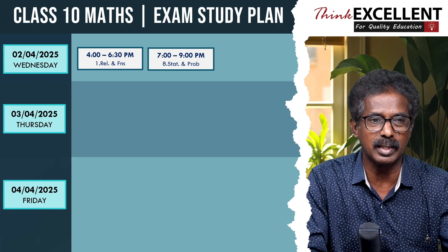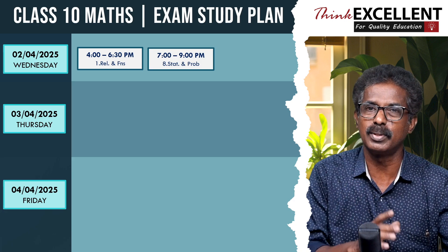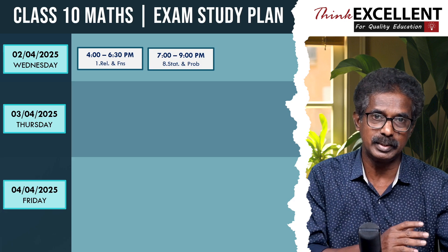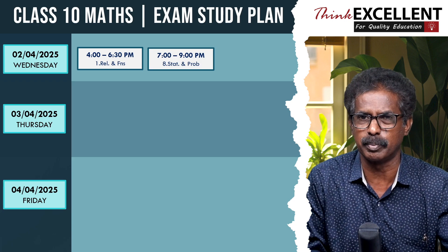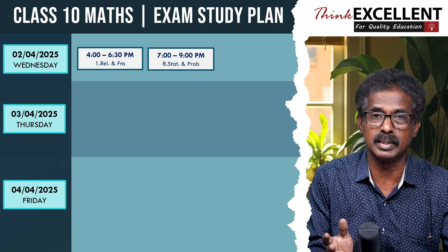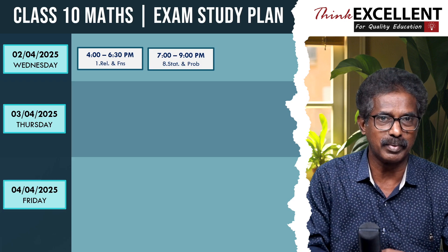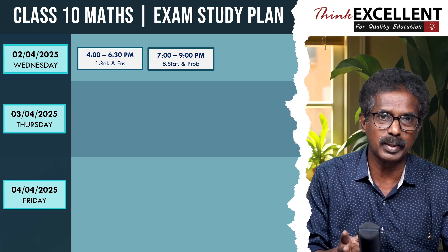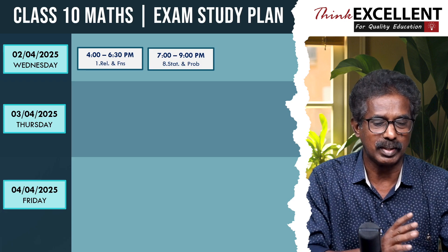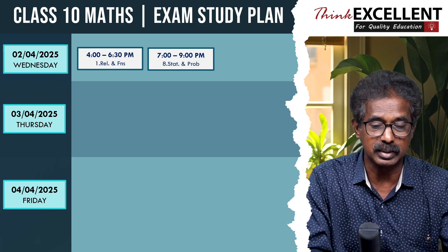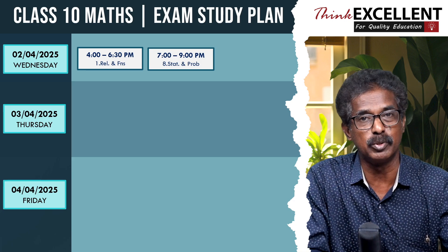Then take half an hour break, then from 7 o'clock to 9 o'clock — in 2 hours — it's easy to learn Chapter 8: Statistics and Probability. It's a comparatively easy topic. In the first two exercises: range, standard deviation, coefficient of variation. The last two exercises: probability. You can easily learn it, and the Venn diagram is also used.